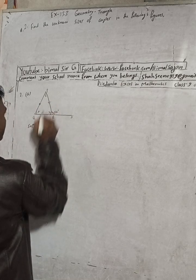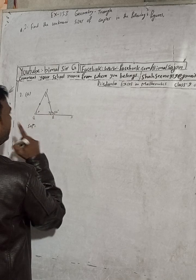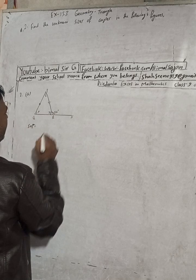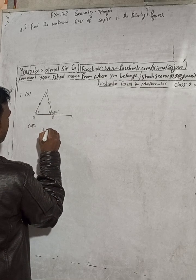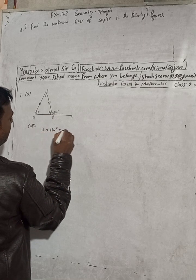Base angles are equal. So what I am going to do here, I will apply this formula. Here x plus, here you can write x plus 110 degrees is equal to 180 degrees.